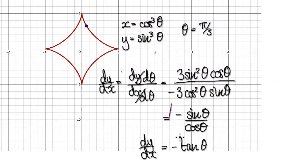And then tidy this up, it gives you this, which is tan theta. So the gradient is given by minus tan theta.